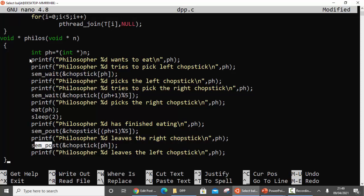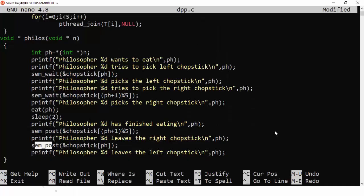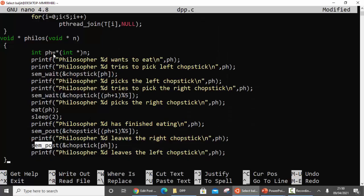Let's suppose the first philosopher wants to eat. Recalling the diagram - if it is the first philosopher, he needs to pick up chopstick number one and chopstick number two. Picking up means he is going to initiate the sem_wait function on chopstick one and then the sem_wait function on chopstick two.